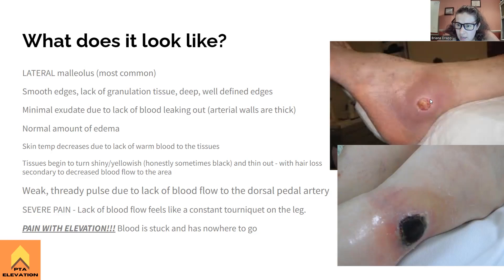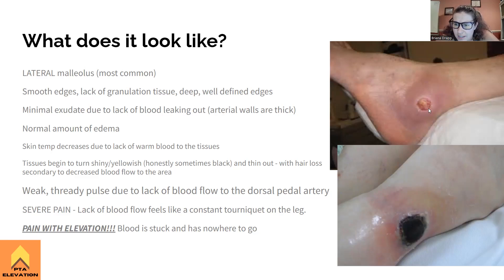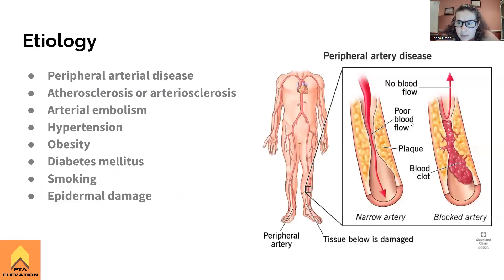The ulcer has smooth edges with a nice round shape — similar to neuropathic ulcers but on the malleolus. Venous insufficiency ulcers have really irregular, jagged edges. Arterial ulcers are more circular and have smoother borders. They also lack granulation tissue on the inside — that's why they have a pinkish, yellowish, shiny appearance inside. They have very minimal exudate.